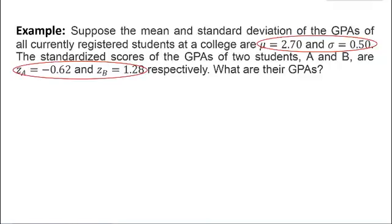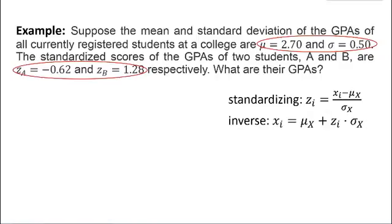Recall that standardized value indicates how many standard deviations an individual observation is from the mean of the dataset. In the case of population, the standardized value z_i corresponding to some x_i equals to x_i minus mu over sigma. However, we notice that the standardized values are given in the example, what remains unknown are the original scores. Don't worry, we can use the inverse formula, x_i equals mu plus z_i times sigma.